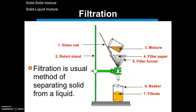Filtration is used to separate heterogeneous solid-liquid mixtures. As you can see in the figure, you have a glass rod to mix the content, a funnel in which you put filter paper so it can filter what passes through it. If you have a mixture of sand and water, or chalk and water, the chalk particles will get trapped in the filter paper in the funnel.